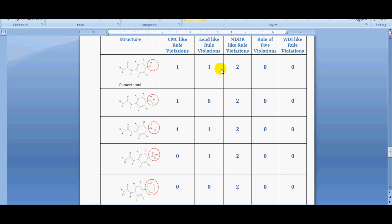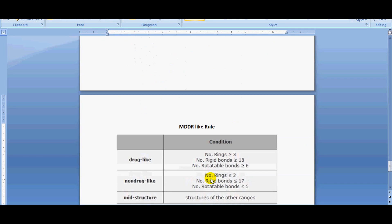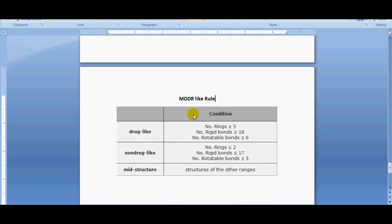When you are considering the CMC rule, the molecular weight field is very important. In MDDR rule, number of rings and number of rotatable bonds are highly important. In MDDR rule, a compound will be drug-like when number of rings are greater than 3, number of rigid bonds are greater than 18, number of rotatable bonds are greater than 6.